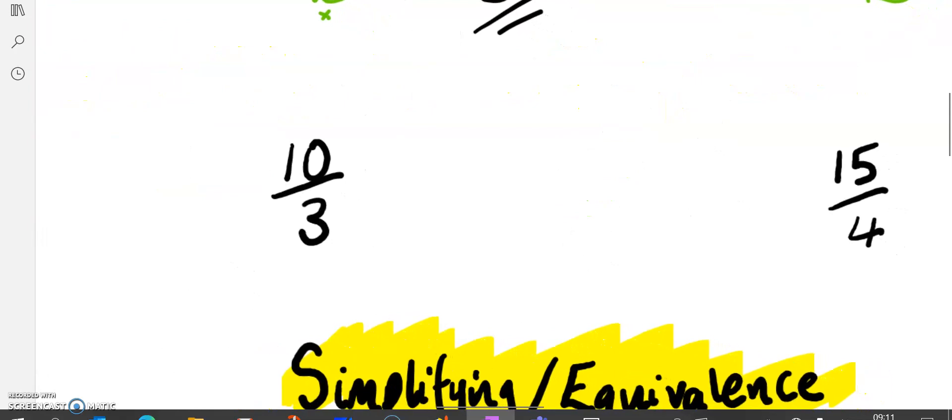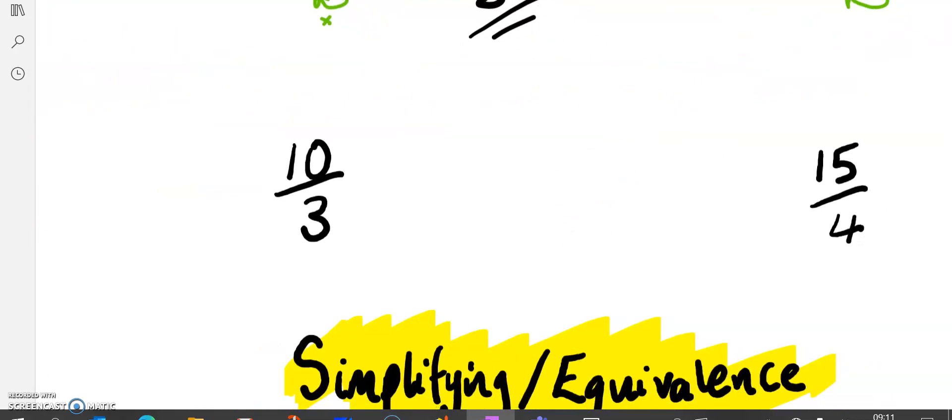Similarly, we might want to try and go from an improper fraction to a mixed number. Here we've got 10 over 3. 10 over 3 means 10 divided by 3. So we ask what is 10 divided by 3? How many 3s go into 10? Well, there's three of them with remainder 1, so it's 3 and a third. You notice the denominator stays the same.